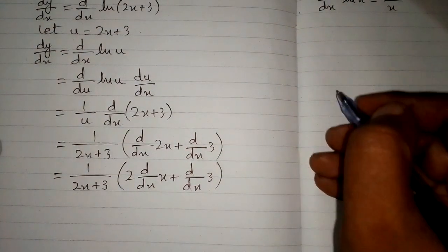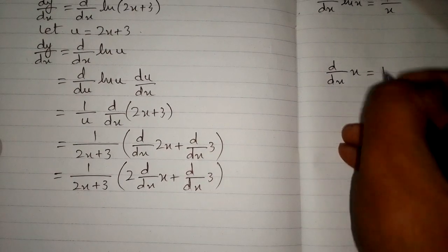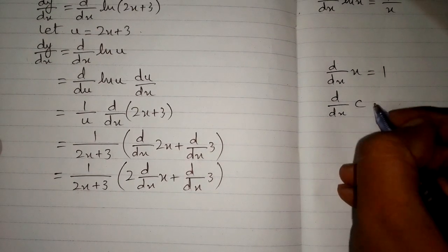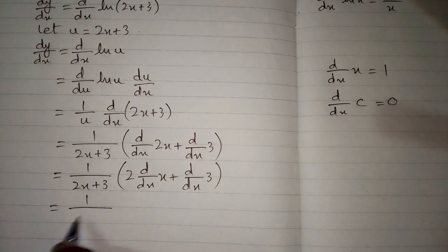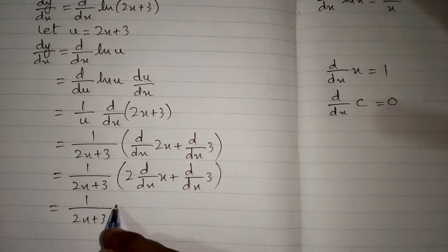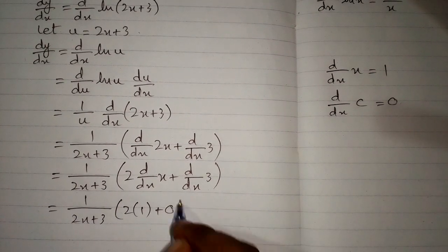Now the derivative of x is 1 and the derivative of any constant is 0. So we will apply this rule, and the derivative of 2x is 2 and the derivative of 3 is 0.